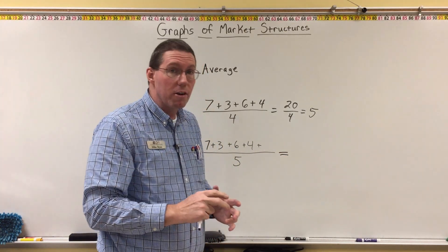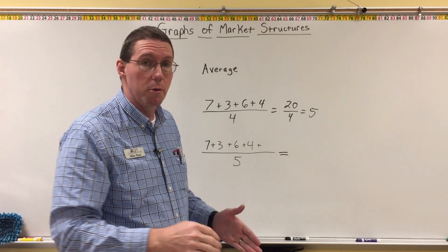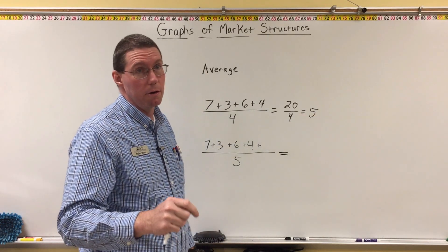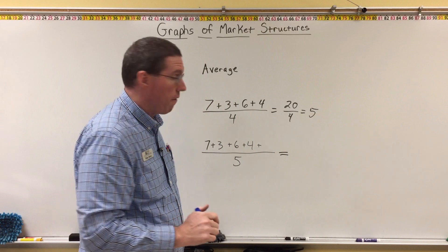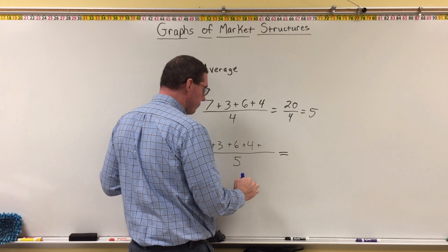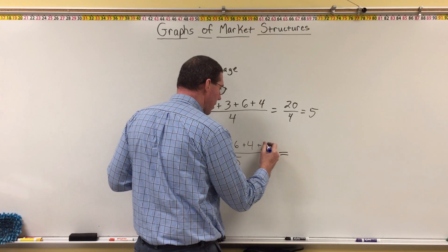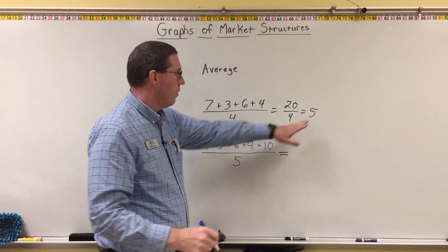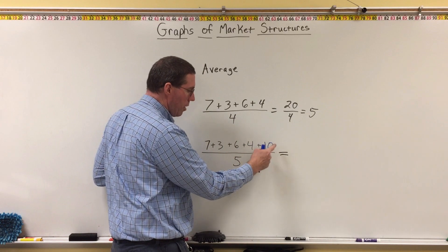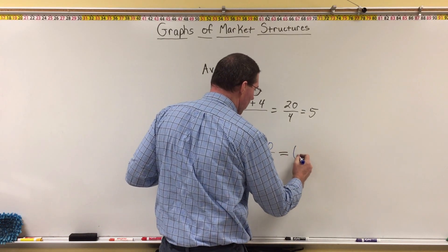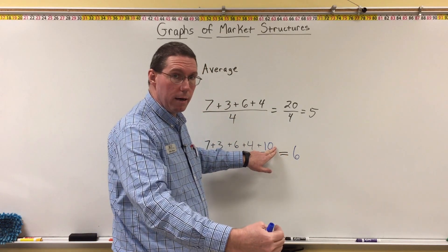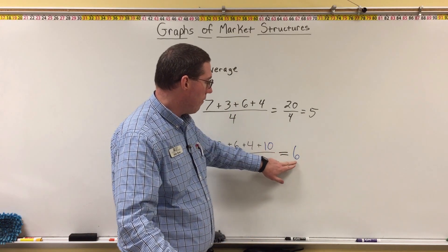Now that may seem very logical, but you'd be amazed at how many people don't understand this basic mathematical concept of averages. It is an important concept for what we're about to learn regarding the graphs of market structures. To prove this: if we put in a 10 — which is larger than our previous average of 5 — we had 20, now we add 10 to get 30, and 30 divided by 5 is 6. So because the next number added was larger, our average went up.